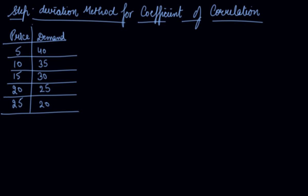In this video we will be studying about the step deviation method for coefficient of correlation. In step deviation method we used to take the deviation from the assumed mean and after that what we used to do was we used to divide it by the common factor.